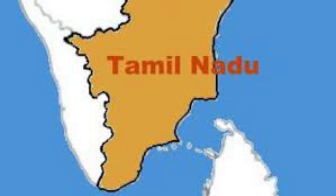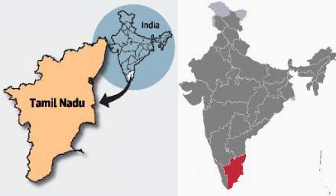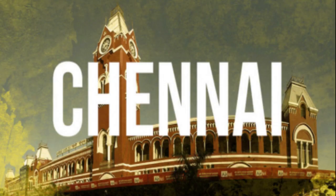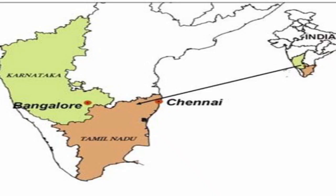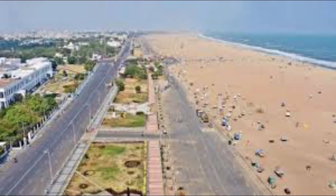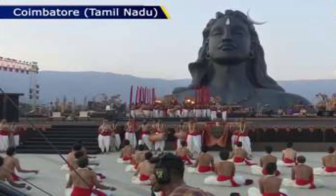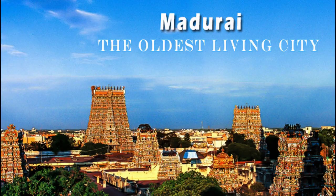Now let us move to the state of Tamil Nadu. Tamil Nadu is located in the extreme south of the subcontinent. The capital is Chennai, which lies on the Coromandel Coast and is an important port. The Marina Beach in Chennai is the longest beach in India. Other important cities of Tamil Nadu are Coimbatore, Madurai, and Tiruchirappalli.